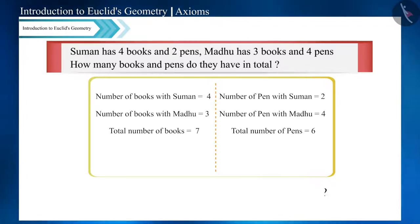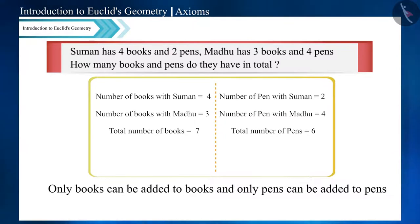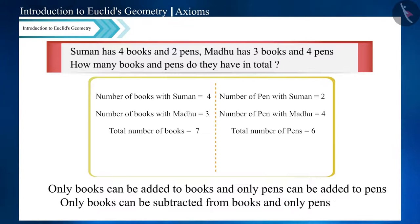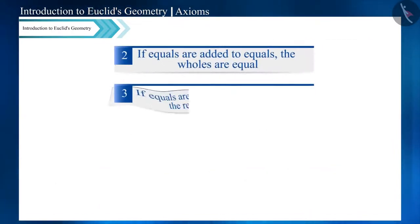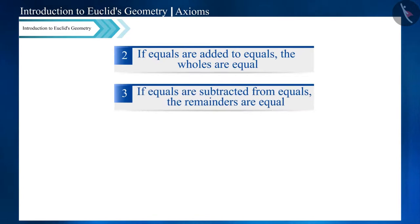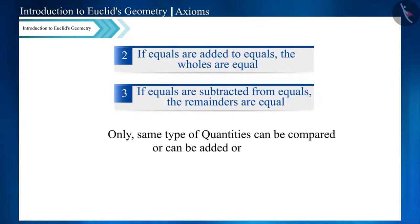No, only books can be added to books and only pens to pens. And not only addition, but subtraction also — only books can be subtracted from books and only pens from pens. According to the second and third axioms given by Euclid, we can say that only the same type of quantities can be compared, added, or subtracted.